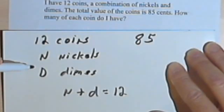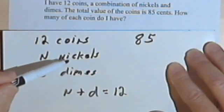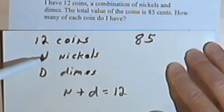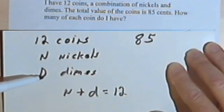And when you have a system of equations, you need two equations. You need as many equations as you have unknowns. And we have two unknowns, the N and the D. Now, the trick here is to remember that nickels are worth 5 cents and dimes are worth 10 cents.